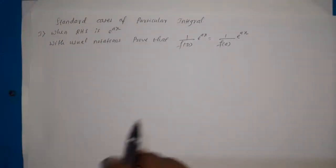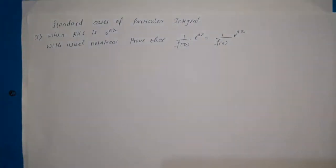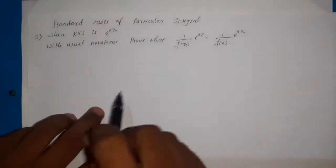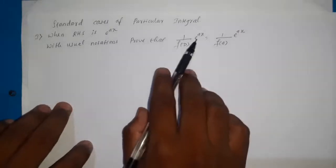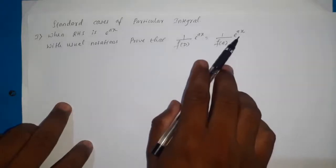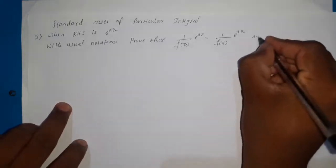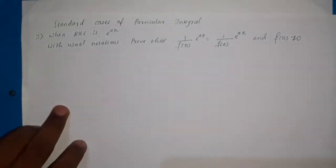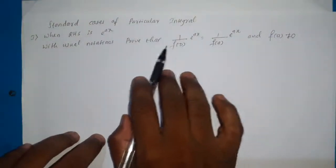Now let us start with the first case of the particular integral. The first standard case is when the RHS is e^(ax) — instead of zero, there will be an exponential function e^(ax), where a is any number. This is important: with usual notations, prove that 1/f(D) · e^(ax) equals 1/f(a) · e^(ax), where a is the coefficient of x in the exponential function and f(a) is not equal to zero. This formula holds only when f(a) ≠ 0.